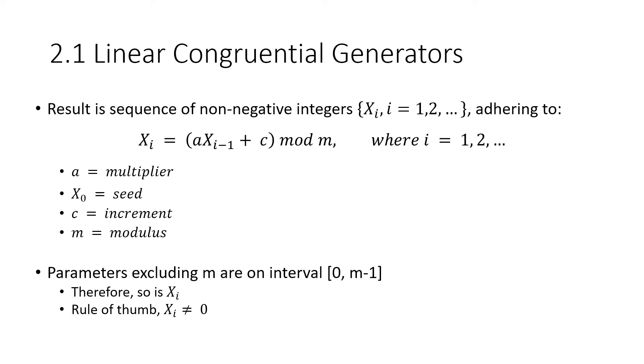So everything except M will be less than M. It's going to lie on the interval from zero to M minus one. So X sub i will always be less than M minus one. And the rule of thumb is that you don't want your X sub i being zero, which is why you're going to make it less than your modulus.